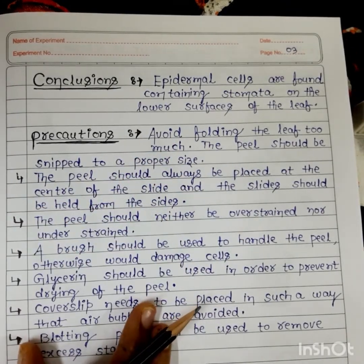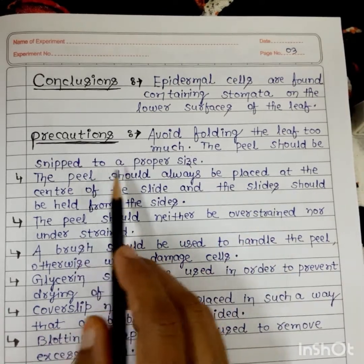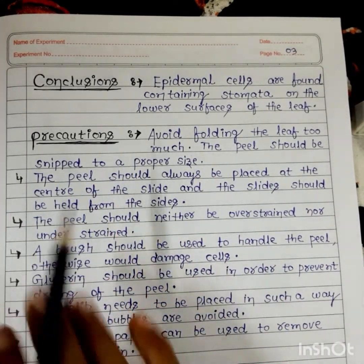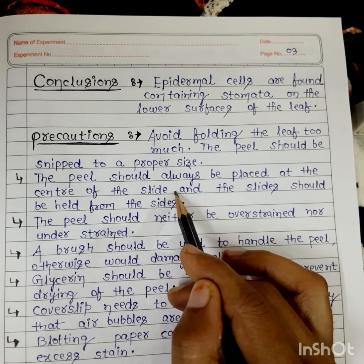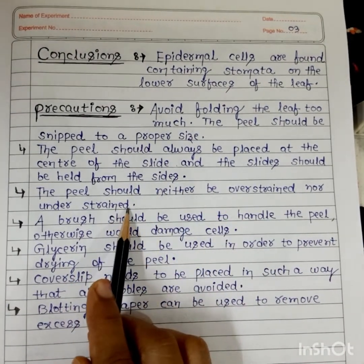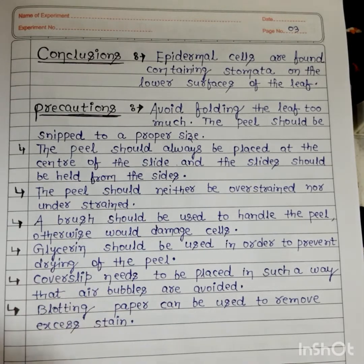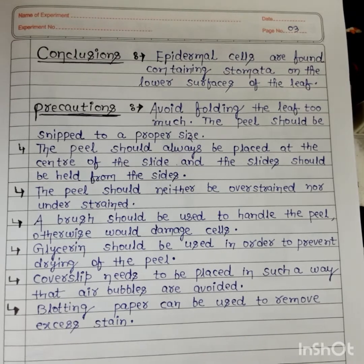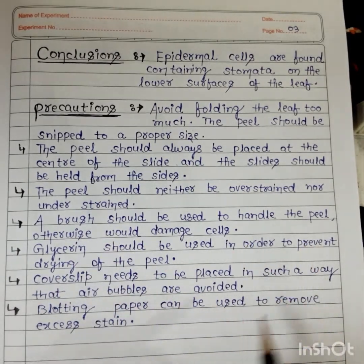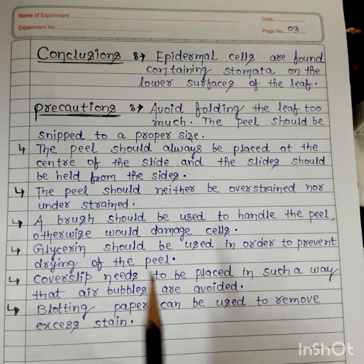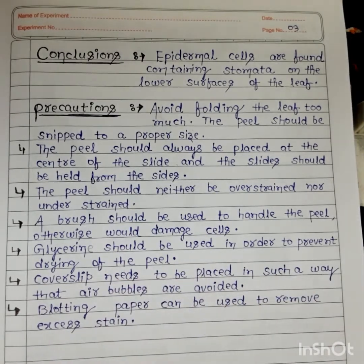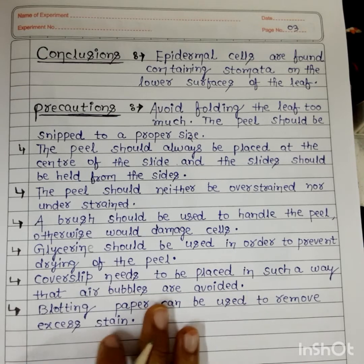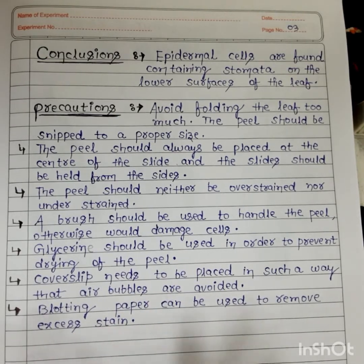Some precautions to follow: Avoid folding the leaf too much. The peel should be snipped to a proper size and placed at the center of the slide, not on the sides. The peel should neither be overstained nor understained when using safranine. A brush should be used to handle the peel — otherwise it would damage the cells. Glycerin should be used to prevent drying of the peel. The cover slip needs to be placed so that air bubbles are avoided. Blotting paper can be used to remove excess stain.